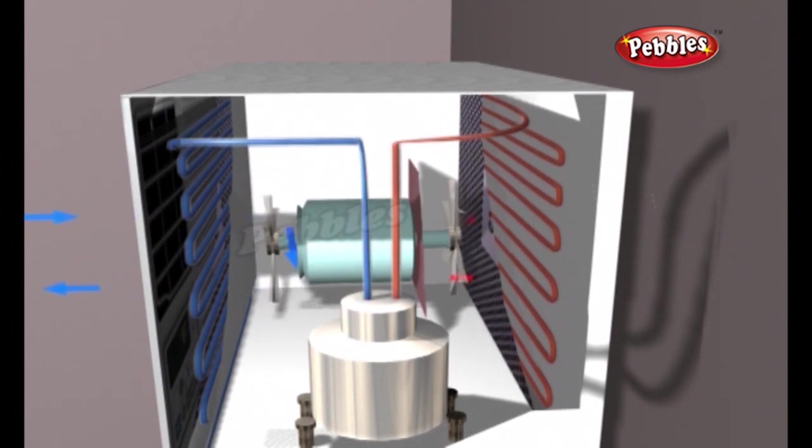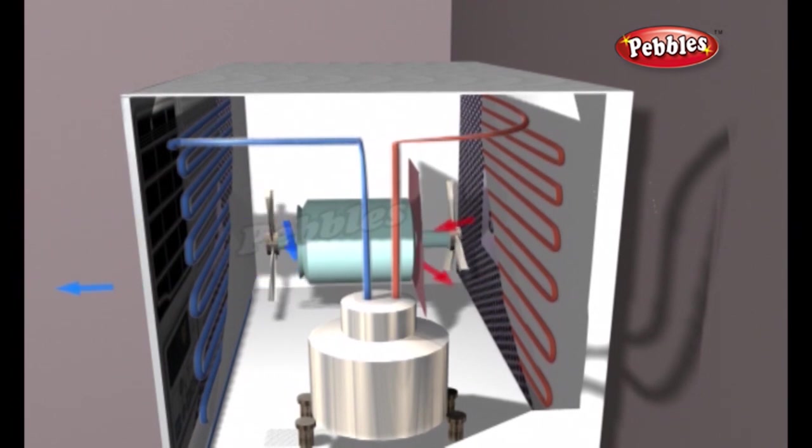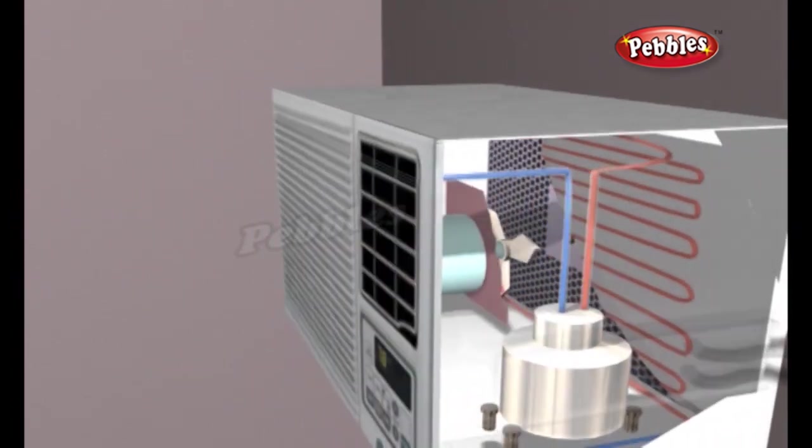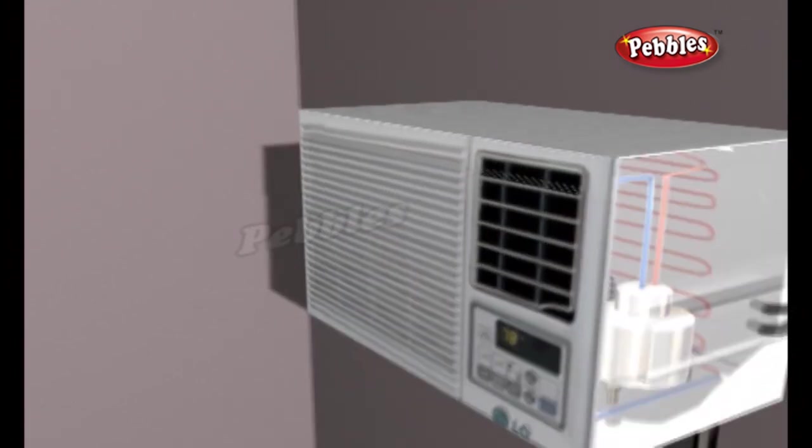At some point, the temperature of the room may equal the cooling power of the air conditioner and the compressor will shut off again.